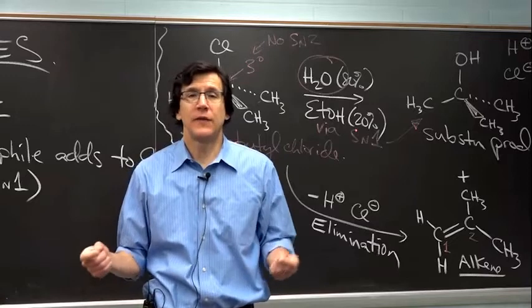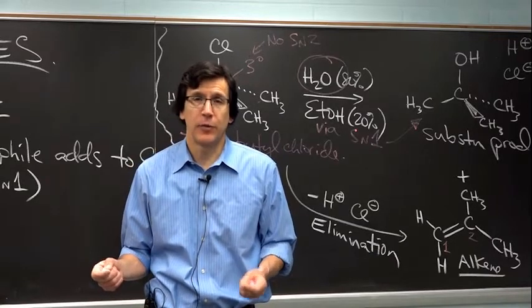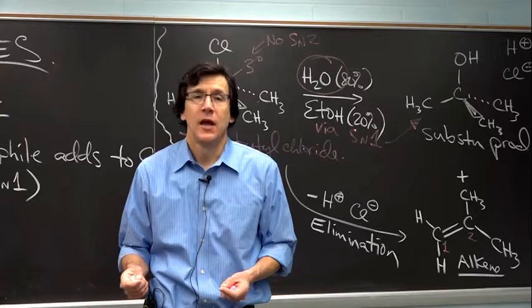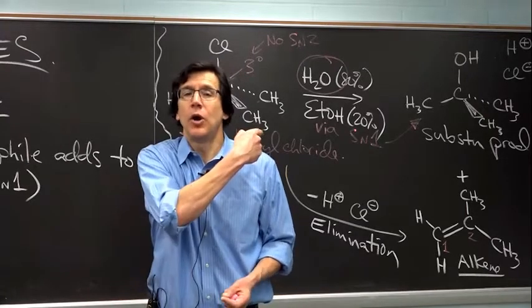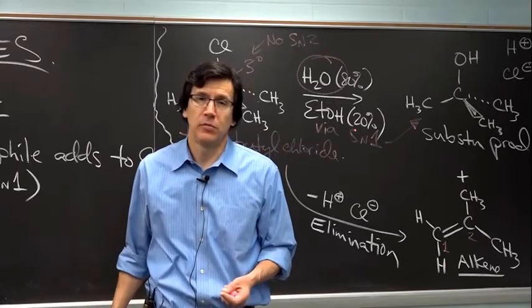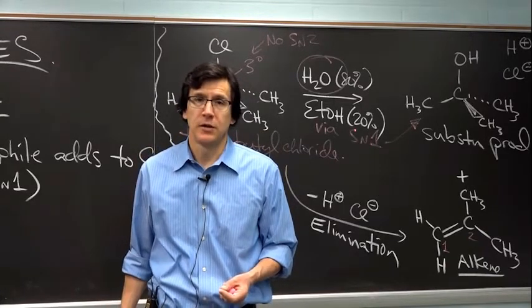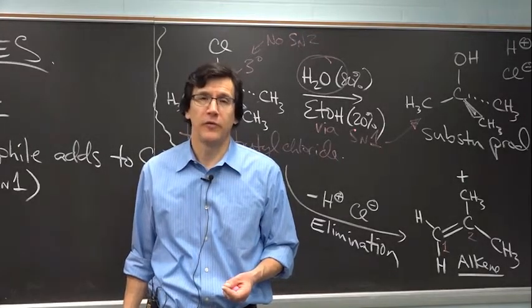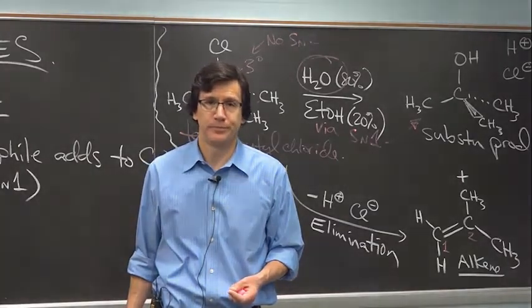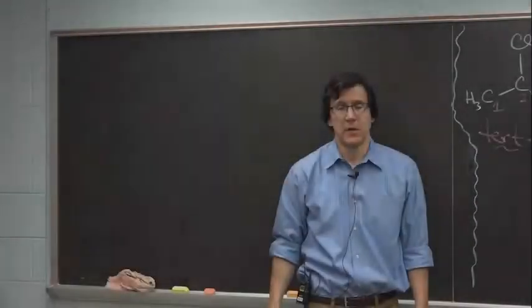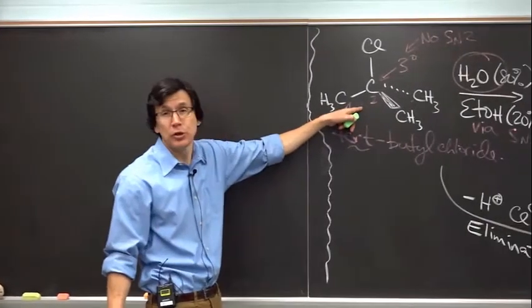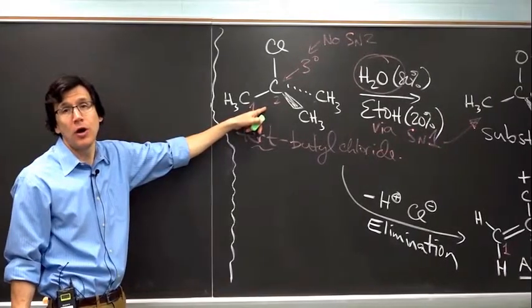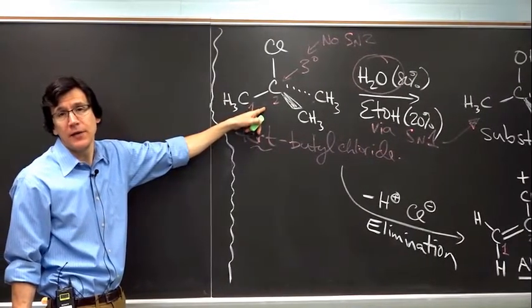So what I want you to do now, now we're going to have to get into the mechanism a little bit, because we're supposed to be talking about carbocation fates. I want you to draw the carbocation that forms upon departure of the leaving group from tertiary butyl chloride. And while you do that, I'm just going to pause the video myself here, so that I can erase the other board.